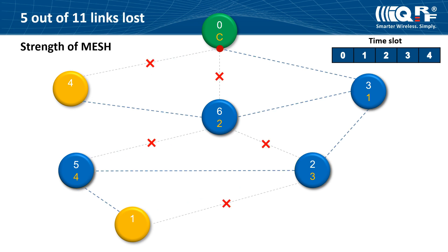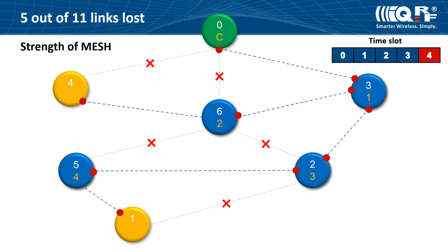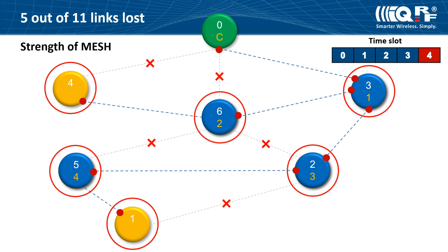The strength of the mesh topology is particularly apparent when the network transmission conditions get worse. This can happen for example due to changes in air humidity or changes in the location of things or people in the space. In this example, 5 paths out of 11 are unavailable. Despite these extreme conditions, thanks to the proper mesh layout of routing nodes using IQMesh routing, the signal spreads to all nodes in the network.